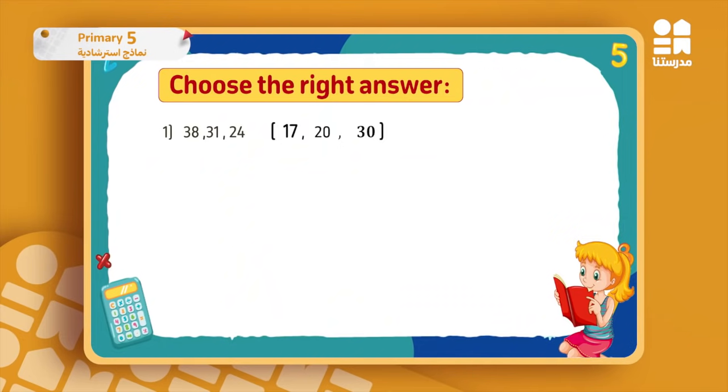I'll start to see how it's getting smaller. I do 38 minus 31, and I see it's decreasing by 7. I want to check: 31 minus 24 is also minus 7. If my pattern rule is minus 7, then to get the coming one, 24 minus 7, so it's going to be 17.